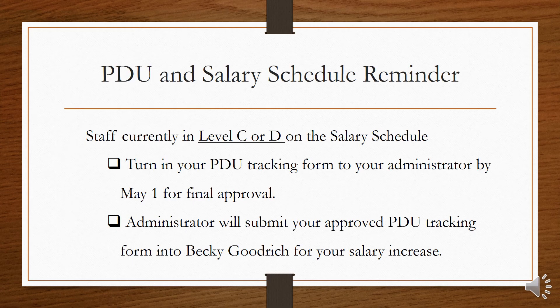This next bit of information is going to be a lot, so feel free to stop the video and ask your PLC point person for more information. In your mailboxes this week, you should have received a revised copy of a booklet that outlines the salary schedule, salary schedule guidelines, and the professional development unit requirements, along with which cell you are currently in. This system was created two years ago at your request. Beginning in July of this year, the salary schedule is complete and ready for you to move either to the right or down a level. For those of you who are on level C or level D this year, you will need to turn in your PDU tracking form that you have been filling out for the last two years in order to move down a level.